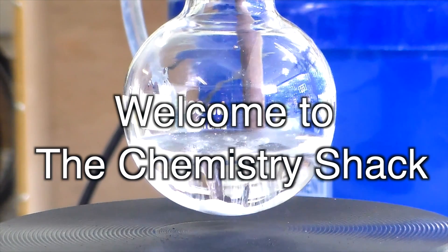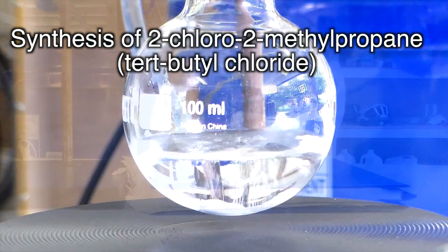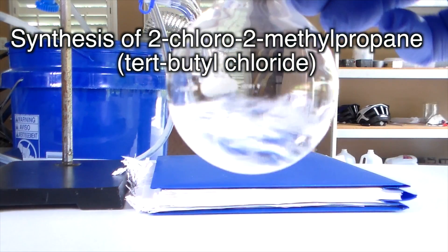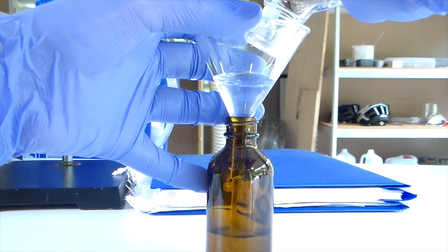Hey guys, and welcome to the Chemistry Shack. In this video, we will be making 2-chloro-2-methylpropane, also known as tertiary butyl chloride, from tertiary butyl alcohol and hydrochloric acid.